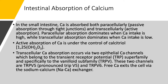How does transcellular calcium absorption occur? We need two epithelial calcium channels belonging to the transient receptor potential superfamily, specifically the vanilloid subfamily TRPV. These two channels are TRPV5 and TRPV6. With magnesium, we discussed TRPV6 and TRPV7, so don't confuse these channels. Free calcium exits the cell via the sodium-calcium exchanger — calcium goes out, sodium goes in.